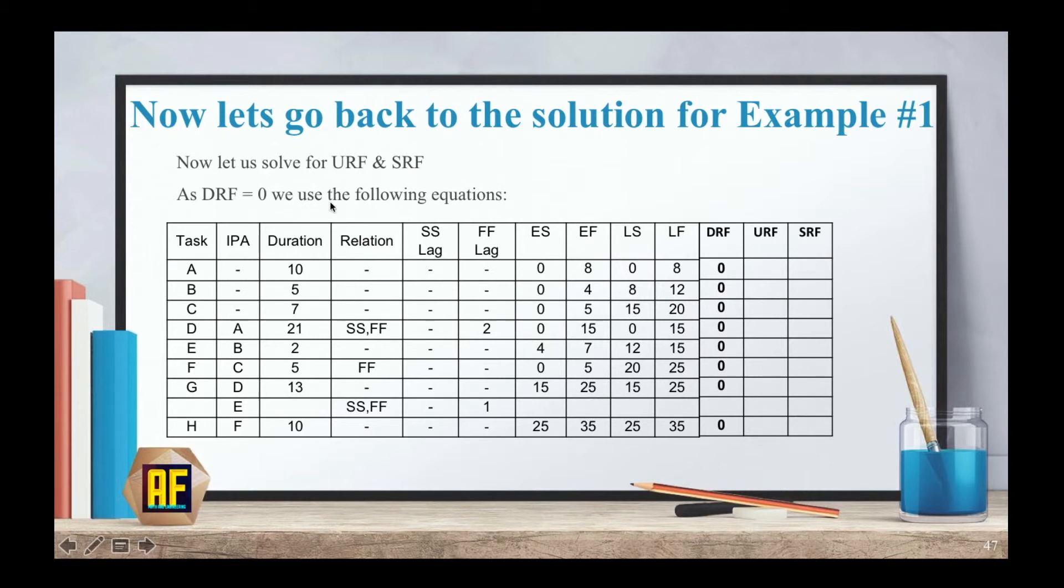And now as DRF equals zero, we use the following equations. URF, we use this equation. And SRF, we use this equation. Now again, pause the video. Solve the URF on your own. And I'm going to write all the answers here in a few minutes. Don't forget to pick the smaller of the two. The answers are for URF. And now try to do the same thing for the SRF. And here's the answer for the SRF.